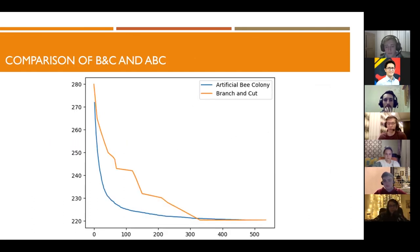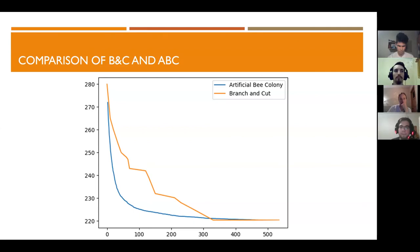This is a graph of the convergence of two algorithms, and you can see that on average the artificial bee colony algorithm converges faster than branch and cut.